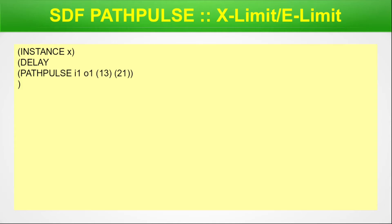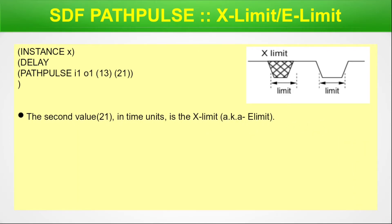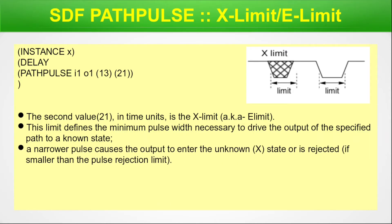Now let us look into the x-limit or e-limit using the same example and infographics. The second value — 21 time units — is the x-limit, also known as the e-limit. This limit defines the minimum pulse width necessary to drive the output of the specified path to a known state. A narrower pulse causes the output to enter an unknown state, or is rejected if smaller than the pulse rejection limit.